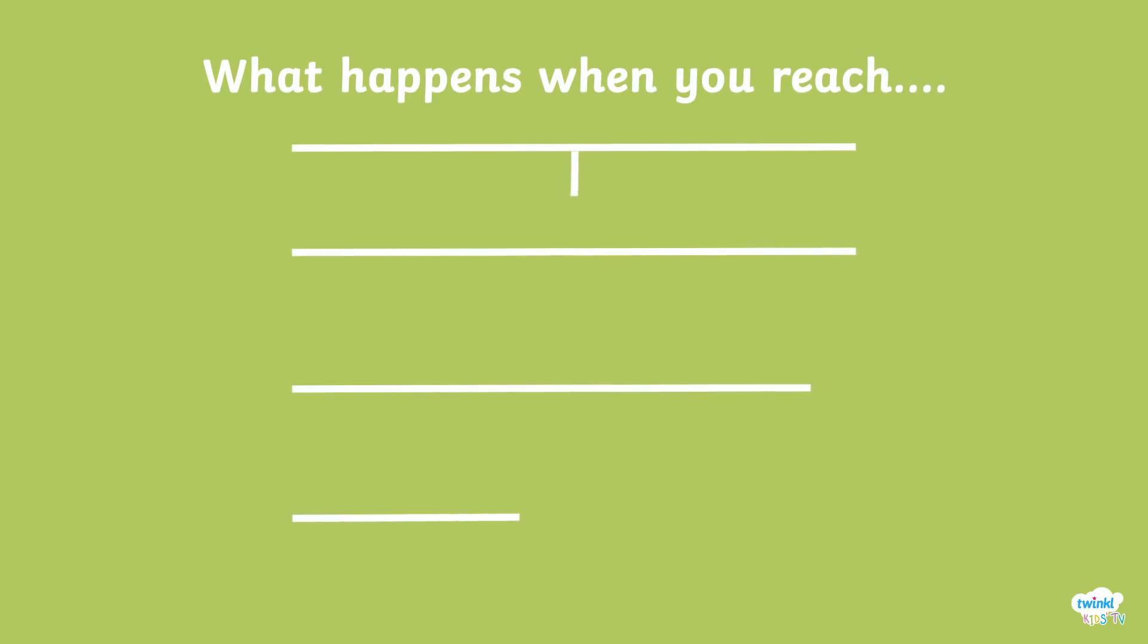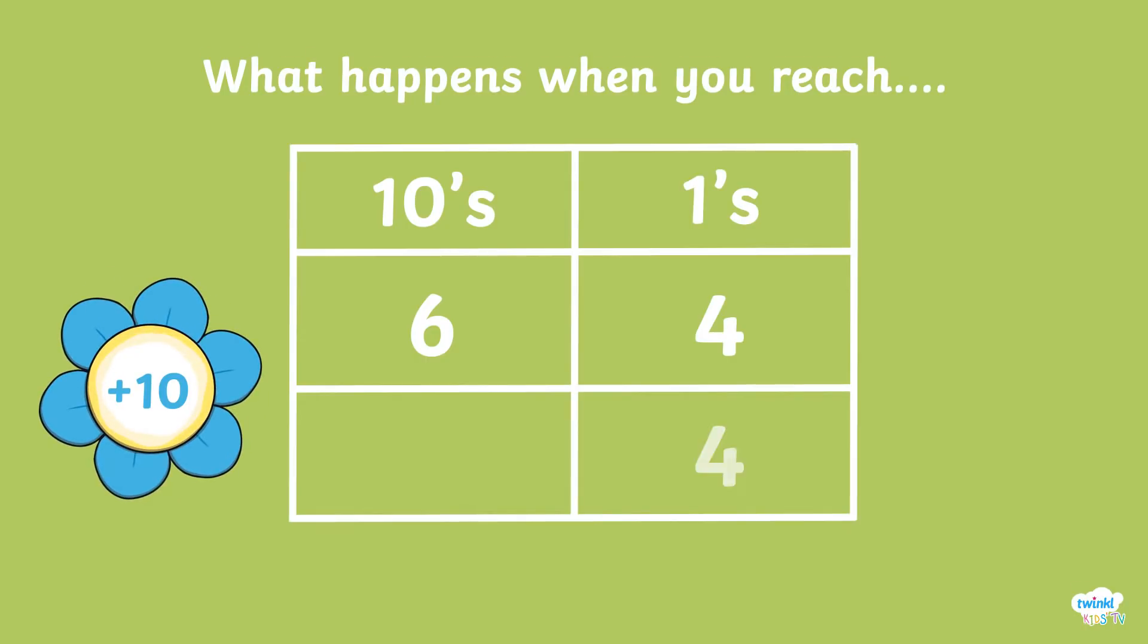Let's look at our place value table. Here you have your tens and your ones. We partition 64 and place the 6 into our tens column to represent 60 and the 4 into the ones column. When we add 10, the ones always stay the same.